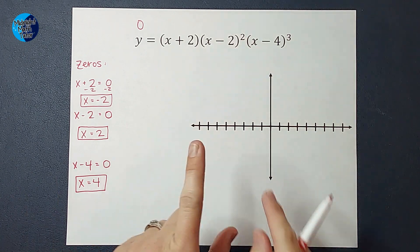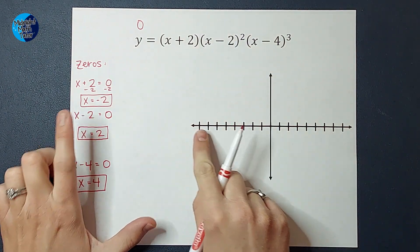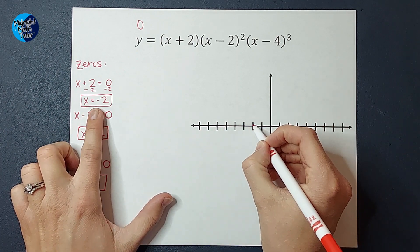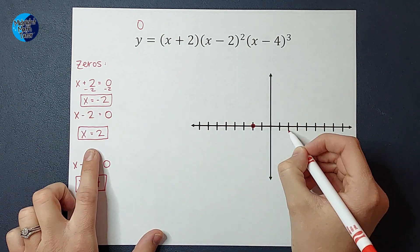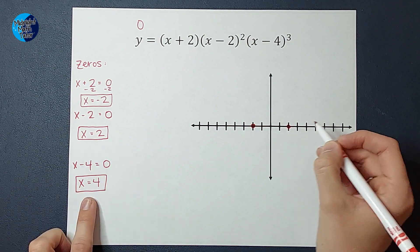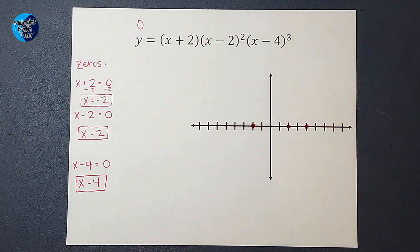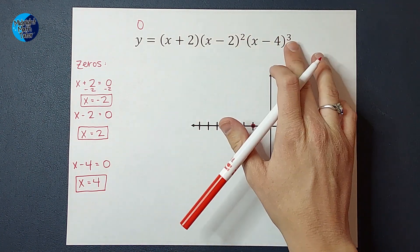Now, let's graph them first. So we know these are where we touch the x-axis. So I've got negative two, two, and one, two, three, four. Now I am going to make a note for myself because of this squared and cubed.